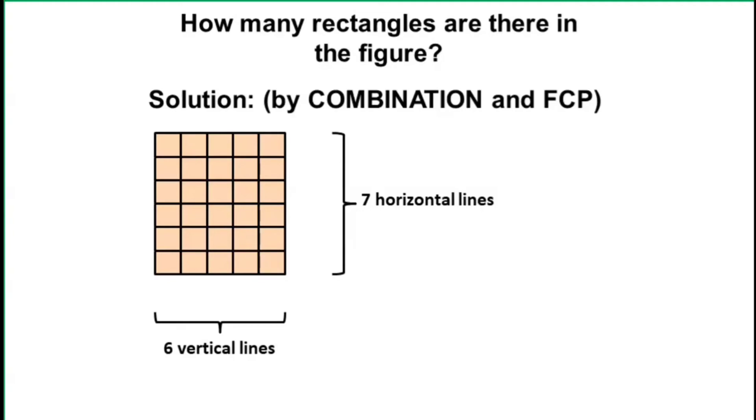Now, how does this idea help in solving the problem? Alright, it has something to do with the combination. As what we have seen a while ago, we can form a rectangle by using 2 horizontal lines out from the 7 horizontal lines. Or, in symbol, we have 7C2.